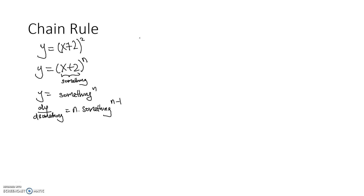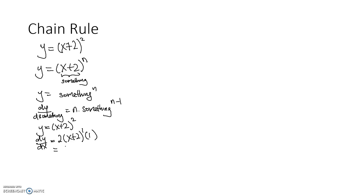So, for y equals (x plus 2) to the power of 2, the first step is to bring down the power like the power rule: bring down the 2, keep what's inside the bracket, and subtract 1 from the power. But we're not done — there's an x term inside that we need to differentiate. The x here is just x, and differentiating x gives 1. So when you open it out you get 2(x plus 2), which is 2x plus 2.